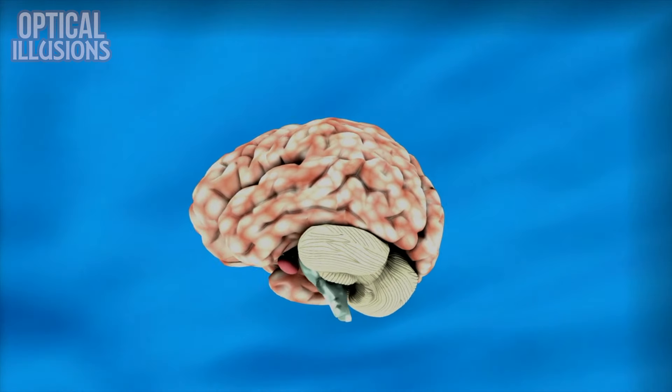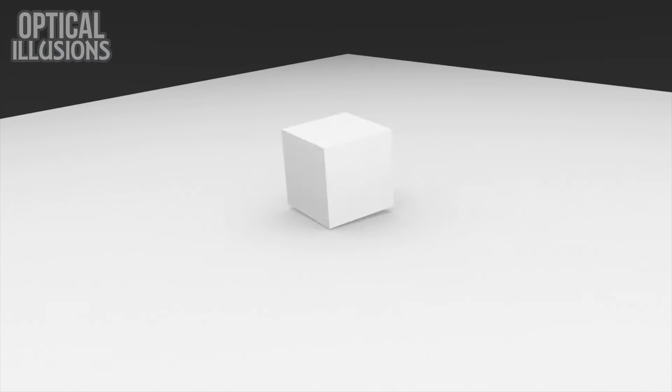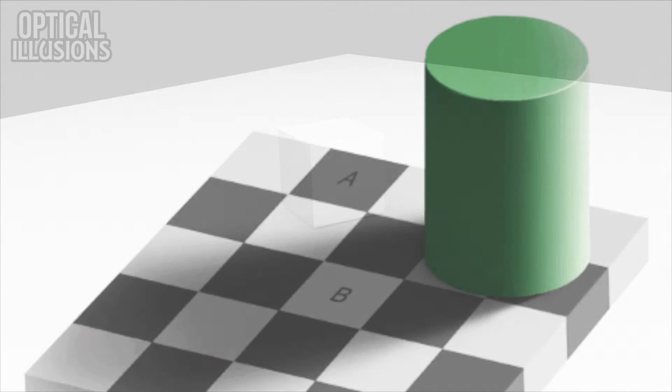First, our brains are trained to recognize patterns, and due to the checkerboard, we think that the squares should naturally alternate colors. Secondly, our brains inherently understand shadows, but in the case of images, shadows darken the color of the image behind it. With these two visual predispositions programmed into our brain, we're fooled into interpreting the image like we would any 3D object, but in actuality, the squares are the same color.